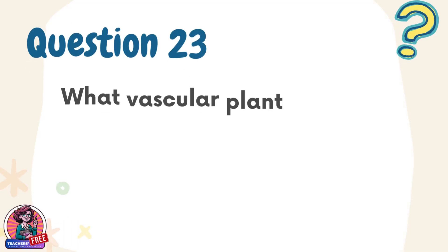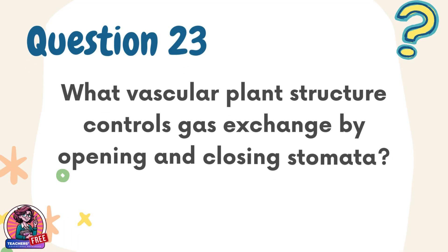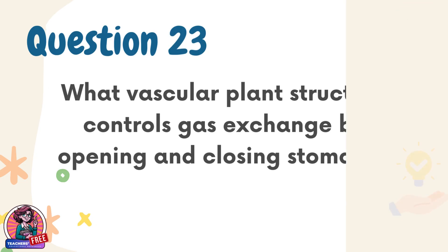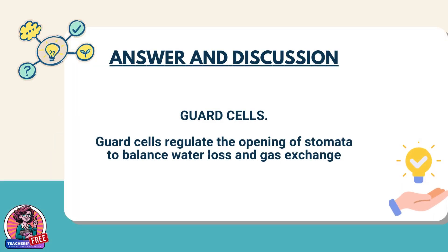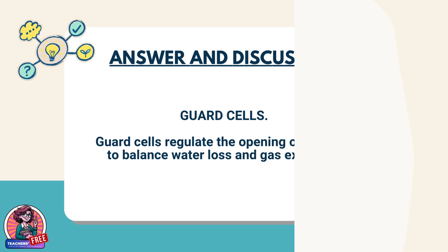Question 23. What vascular plant structure controls gas exchange by opening and closing stomata? Answer: Guard cells. Guard cells regulate the opening of stomata to balance water loss and gas exchange.